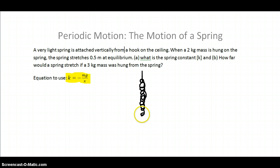Imagine this spring being hung from the ceiling, and a mass is hung on that spring right here. Let's pretend that the top of the box was originally right here and it stretched a distance. Now, the mass of the box is 2 kg, and the distance that the spring stretched was 0.5 meters at equilibrium.